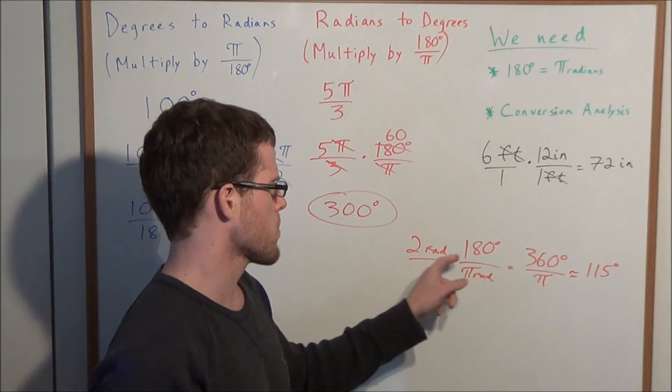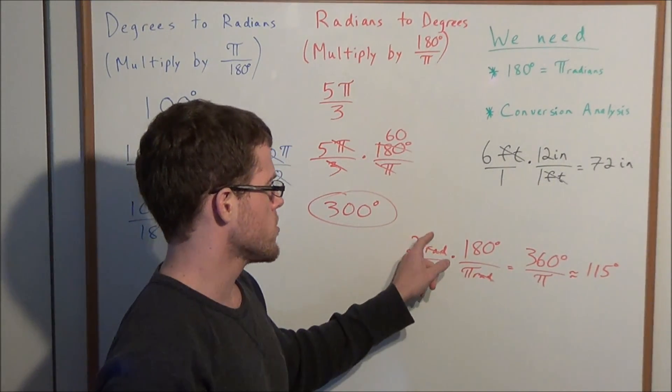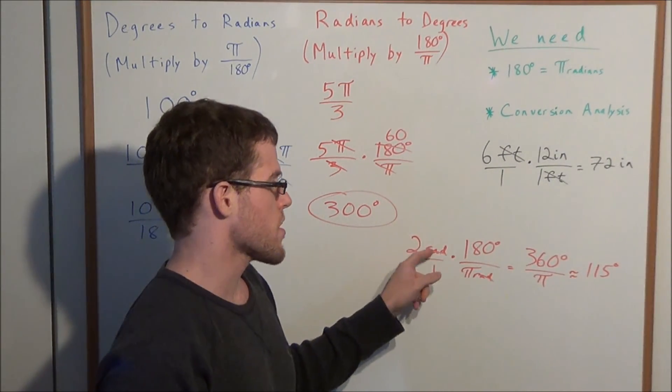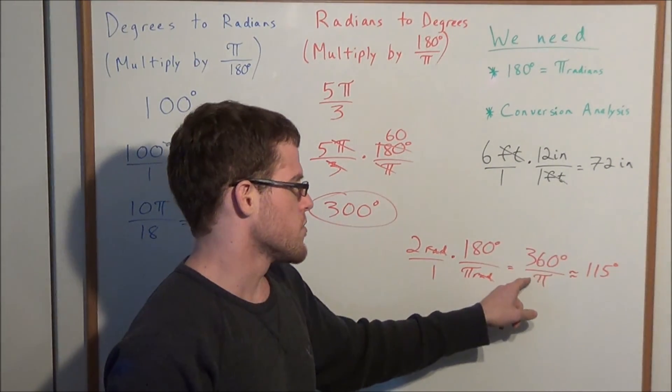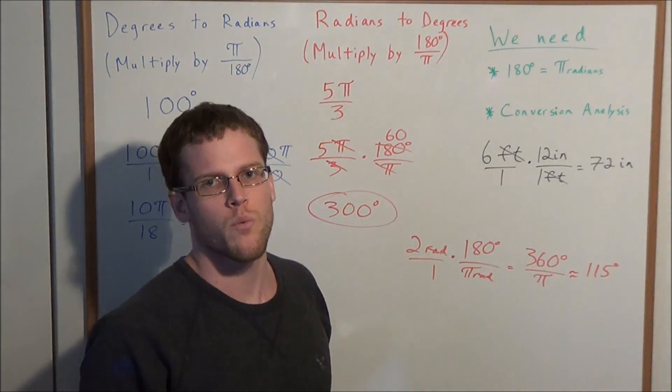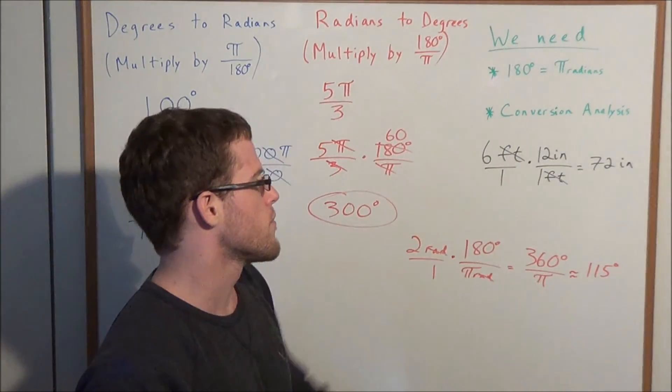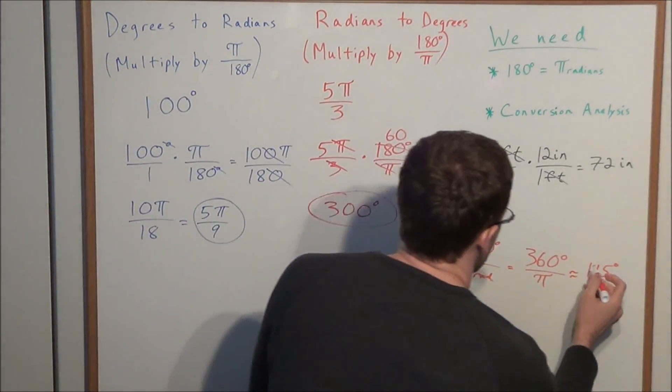In this particular instance where we do not have a π term with our radian measure that we're converting, we would just go ahead and divide by π, which is roughly 3.14, an infinite string of numbers, and we would get 115 degrees.